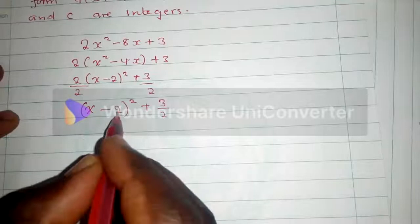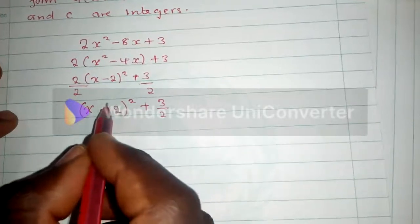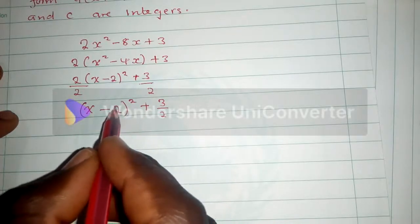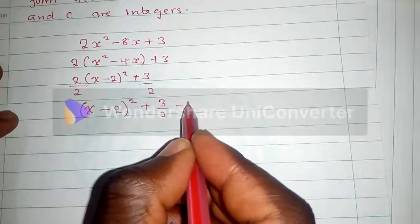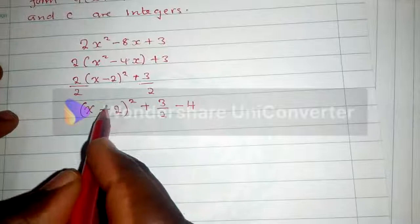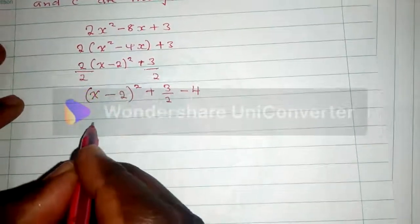Thereafter, square negative 2 over here, so negative 2 squared is 4, so that 4 is subtracted from here, so it would be minus 4. This minus 4 is coming from negative 2 squared.